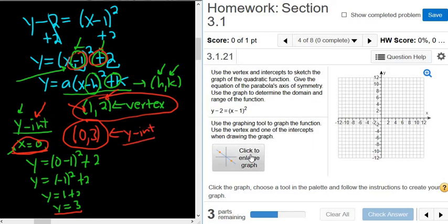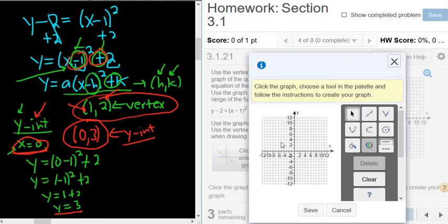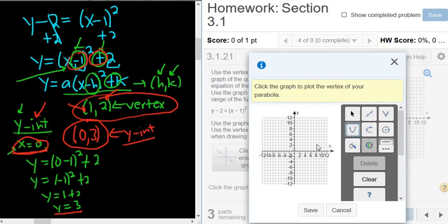So I'm going to click here where it says click to enlarge graph. And then we have to click the correct graph. So we're doing the parabola, so it's this u-looking figure here. So I'm going to click this. You'll notice as I move my mouse across the graph, the numbers in the top right corner change. That tells us where we are on the graph. So we want to be at 1, 2, because it says click the graph to plot the vertex.